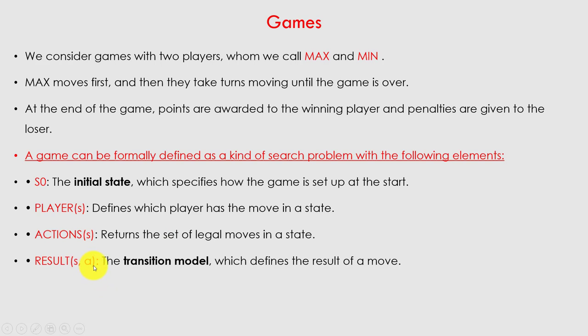Next is the result, written as result(S, A) — the transition model which defines the result of a move. Suppose max plays one step and min plays one step; we decide what the result is. We calculate the result step by step until the computer decides the winner or who receives penalties. That is the transition model.